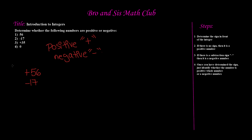Example number three is positive 35. A plus sign means positive, so 35 is a positive number.